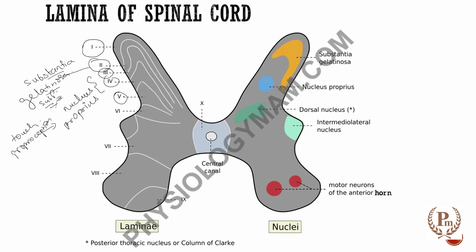Then comes lamina five, which responds to both pain and visceral stimuli. After that comes lamina six — this is the deepest layer in the dorsal horn, and it contains neurons which respond to mechanical stimuli. The signals coming from mechanoreceptors arrive here and then ascend up. So we have mechanical signals coming from the skin to lamina six.